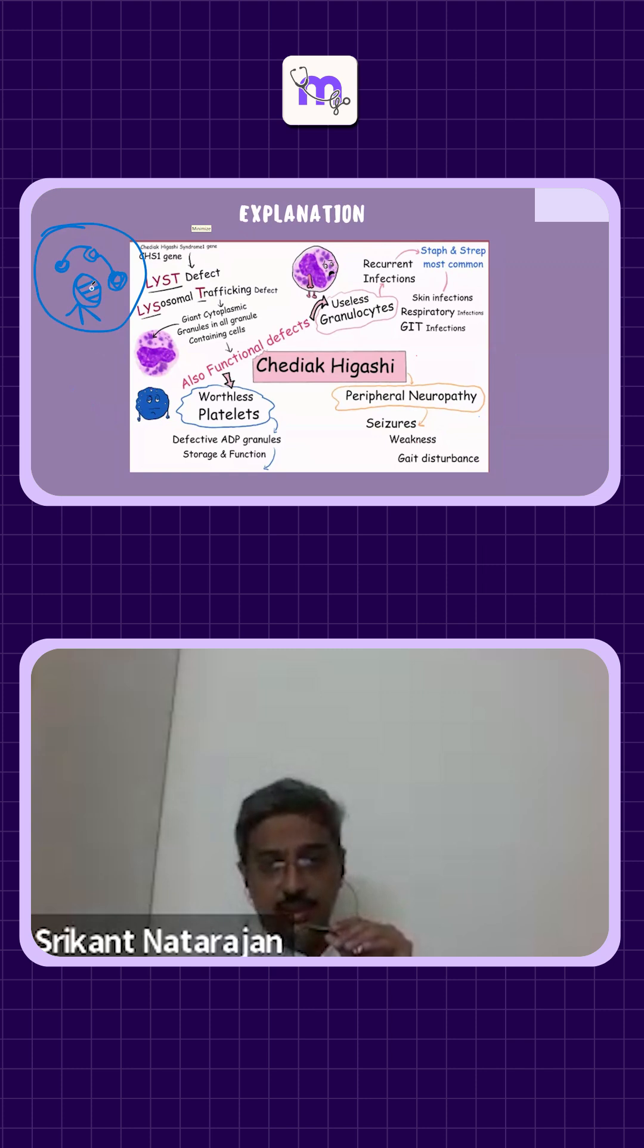We have a small grill sitting inside a neutrophil. Now, this grill is basically burning out all the organisms that are coming up, and you have train tracks on which lysosomal molecules are moving around.